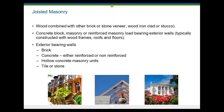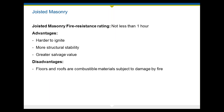The best advice I can give agents is: when in doubt, pick up the phone and call the underwriter. Advantages of joisted masonry: it's harder to ignite and does better in a fire. More structural stability, even in wind, it performs much better. Greater salvage value — you can have a fire in a joisted masonry building and still retain the walls and just rebuild what was damaged. Whereas if it's frame, when you have a fire, many times it's a total loss. Disadvantages: floors and roofs are combustible material subject to damage by fire. The weakest point of a joisted masonry building is the wood trusses.